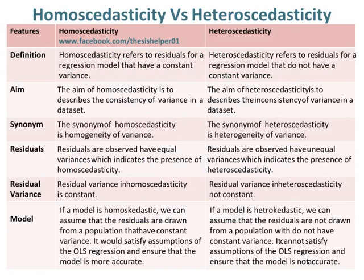Homoscedasticity refers to residuals for a regression model that have a constant variance. Whereas, heteroscedasticity refers to residuals for a regression model that do not have a constant variance. The aim of homoscedasticity is to describe the consistency of variance in a data set.